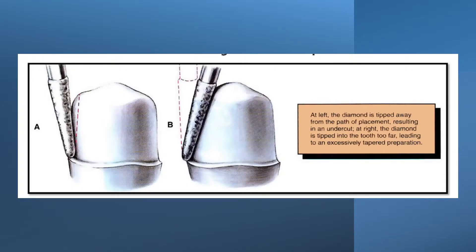I think the second most important learning point is maintaining the long axis of your burr and not leaning the burr on the tooth or away from it, therefore creating an undercut. I think this is one of the most common mistakes when people start to do posterior zirconia crowns, as they end up with a very wide base trapezoidal or pyramidal substructure and cannot get their crown to seat fully.